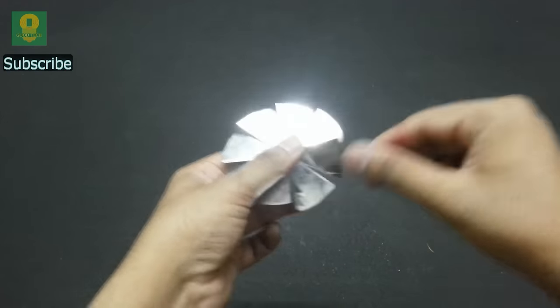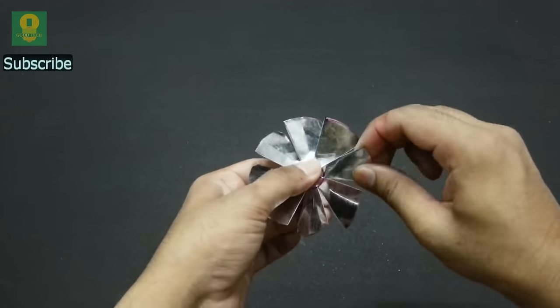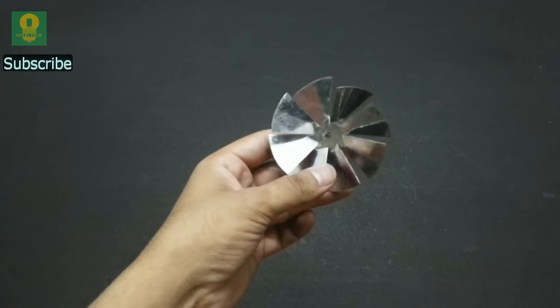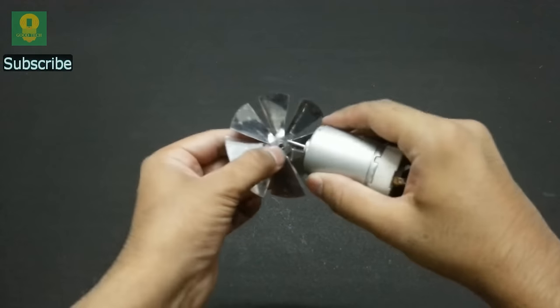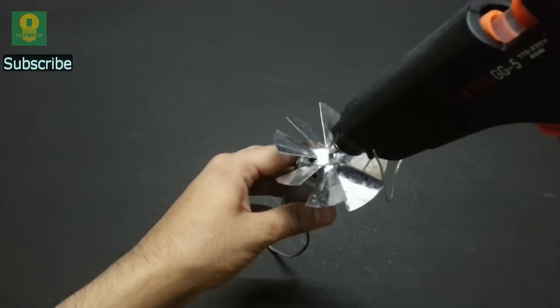Bend each blade equally to make a propeller, and also drill a hole in the center. Take a high RPM DC motor and attach the propeller to the motor shaft. Secure the propeller using hot glue.